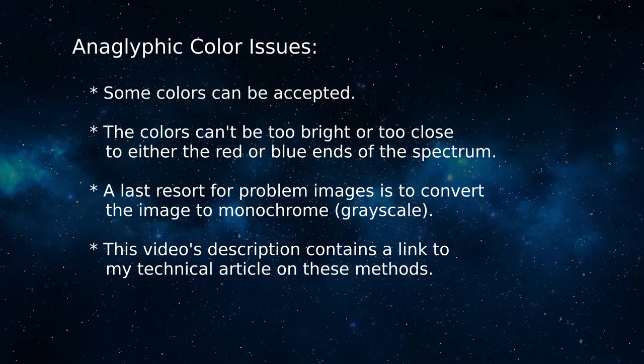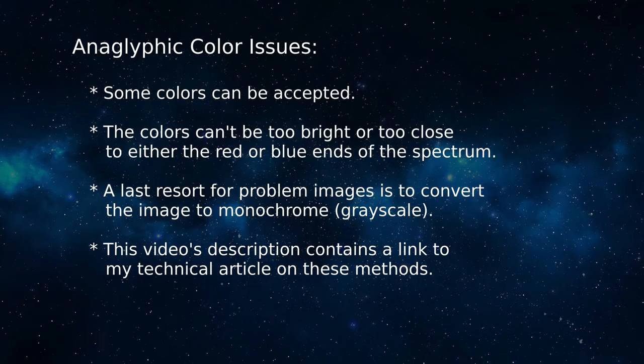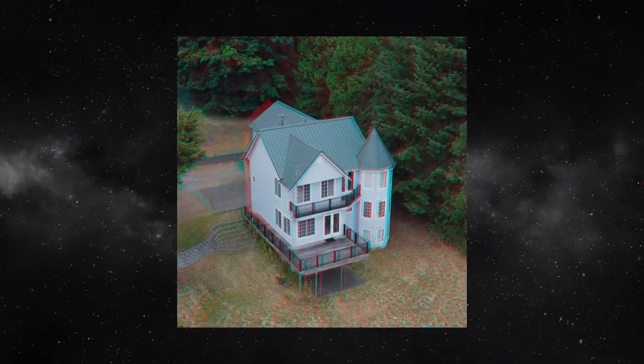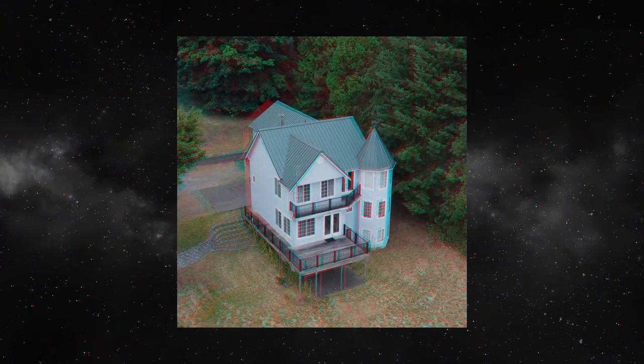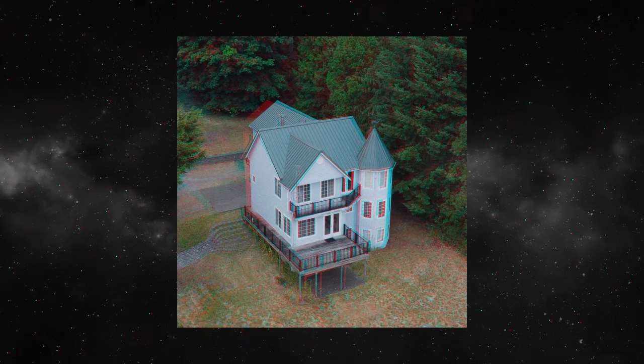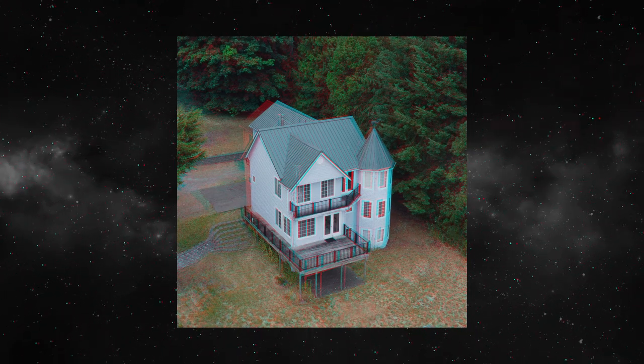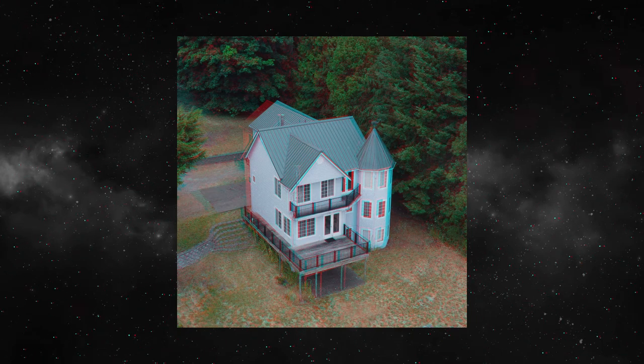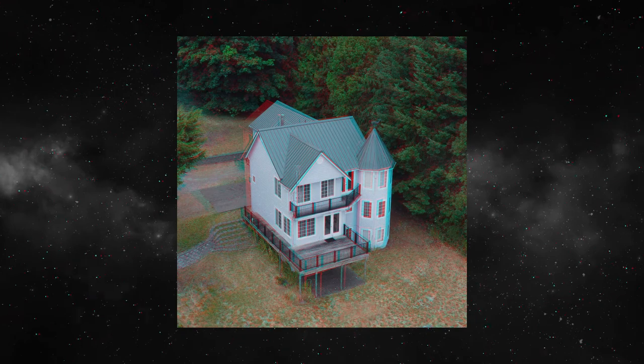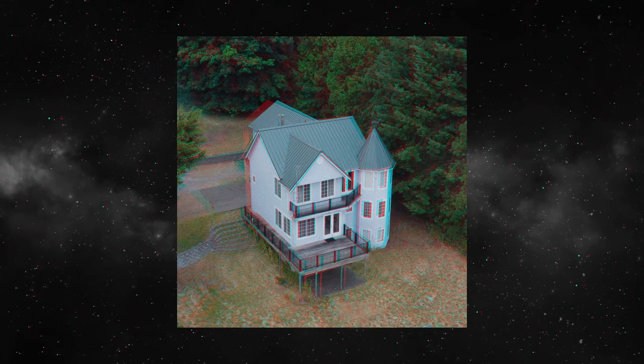And again, a full technical rundown and detailed methods are linked in this video's description. This house picture came out rather well considering that I just processed the picture without thinking about the image's colors. It turns out the colors are all muted, not saturated or extreme, and none of them approach too closely to the red or blue end of the spectrum, so the image works well in 3D with its original colors.